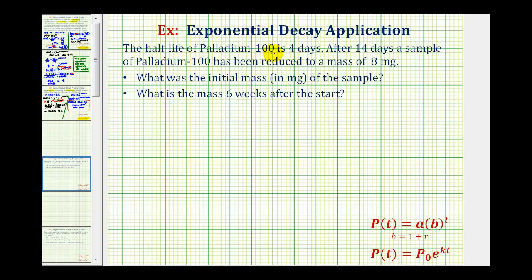The half-life of palladium-100 is four days. After 14 days, a sample of palladium-100 has been reduced to a mass of eight milligrams. We want to determine the initial mass of the sample and also determine the mass six weeks after the start date.